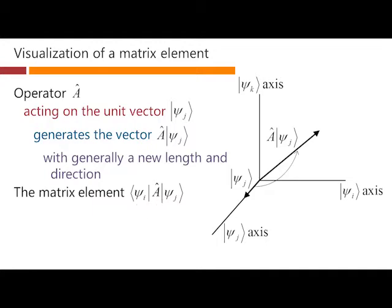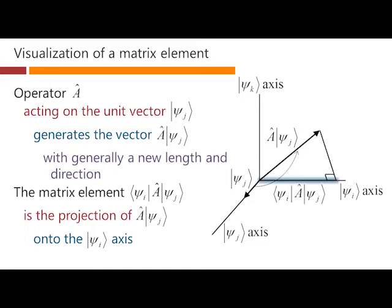The matrix element, ⟨ψi|A|ψj⟩, is the projection of this vector onto this axis. So explicitly, it's this length here that is this object. Now, we're using a geometrical analogy here, and the only weakness of that is that we can't really indicate the complex values that are going on in these various projections.